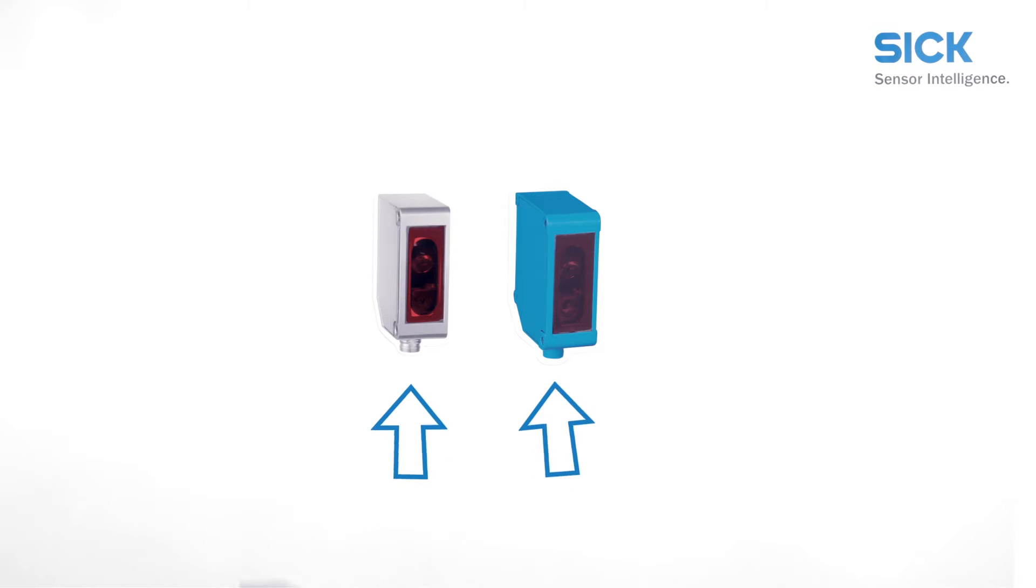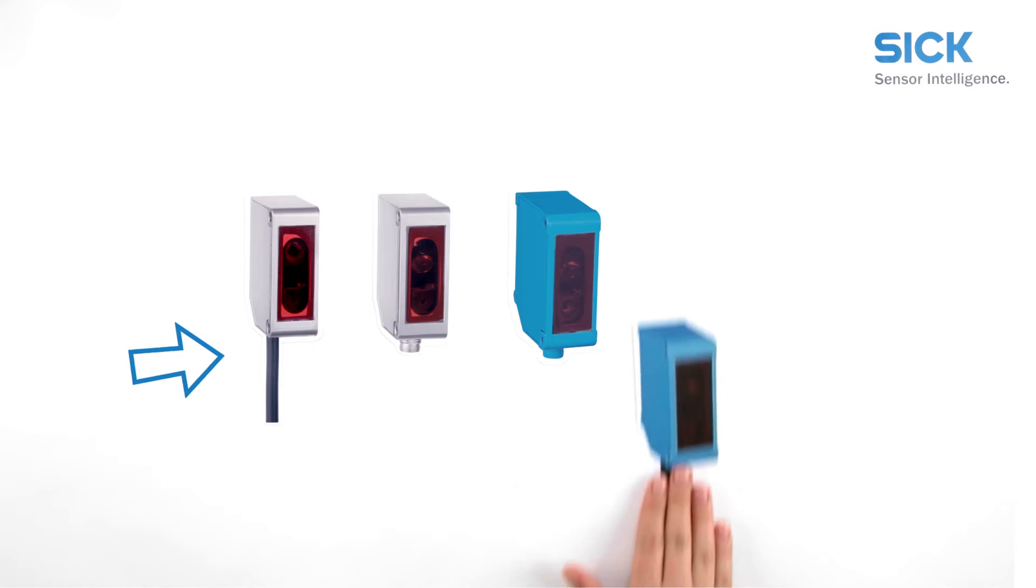The OD Mini is available in two versions: stainless steel housing for use in harsh environments or aluminum housing for highly dynamic applications, for example, on robot arms or grippers. Both housing types are available as connector versions or cable versions with connector.